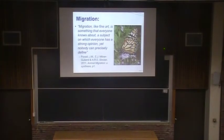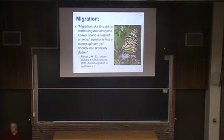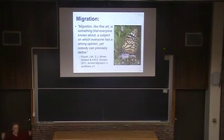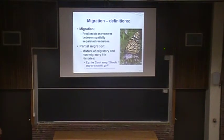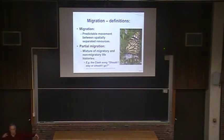Migration — this is a quote from a fairly recent book on animal migrations: 'Migration, like fine art, is something that everyone knows about, a subject on which everyone has a strong opinion, yet nobody can precisely define.' That seems strange in this day and age. Human migrations — these diasporas we're all a product of — are not really migration. They're just one-way movements, range expansion. Migration is something that's predictable. I define migration as predictable movement between spatially separated resources: if something is moving back and forth between resources on a predictable basis rather than randomly, then it's migration.